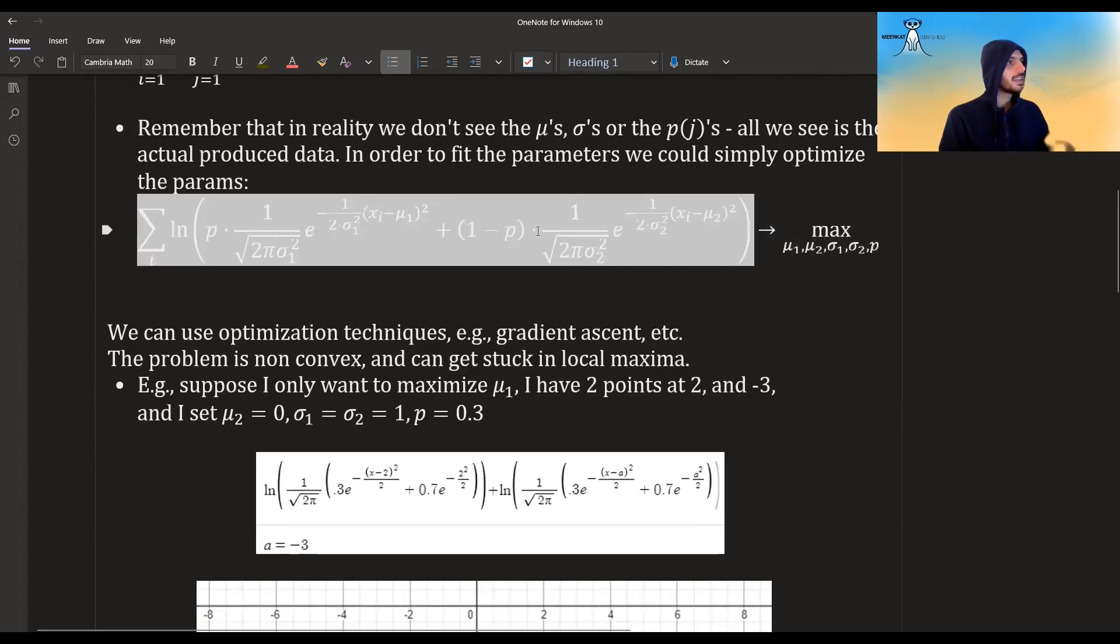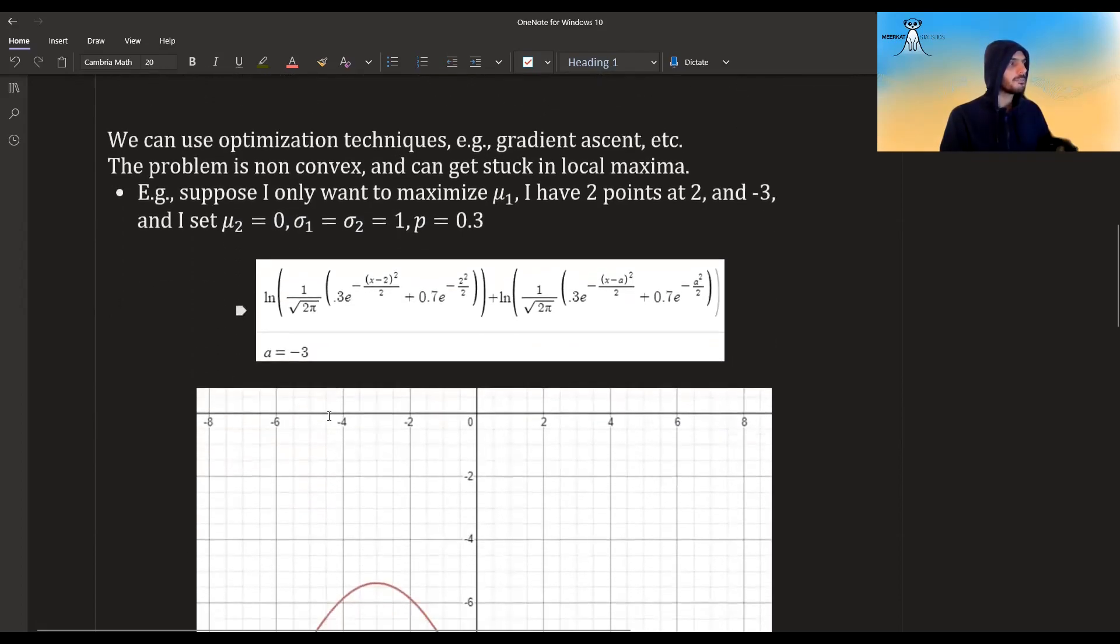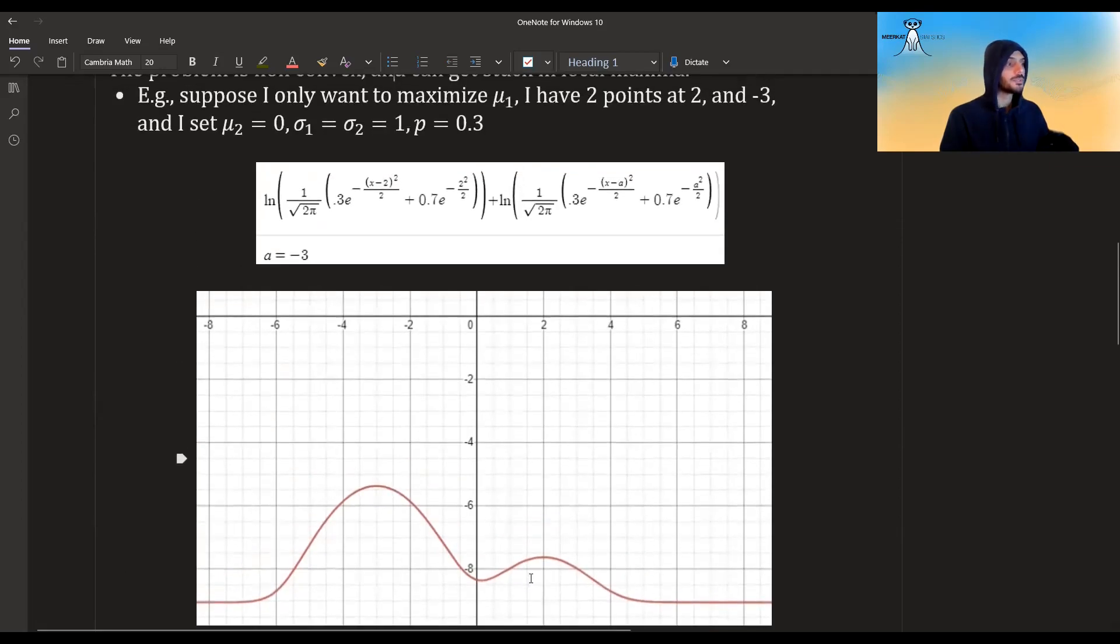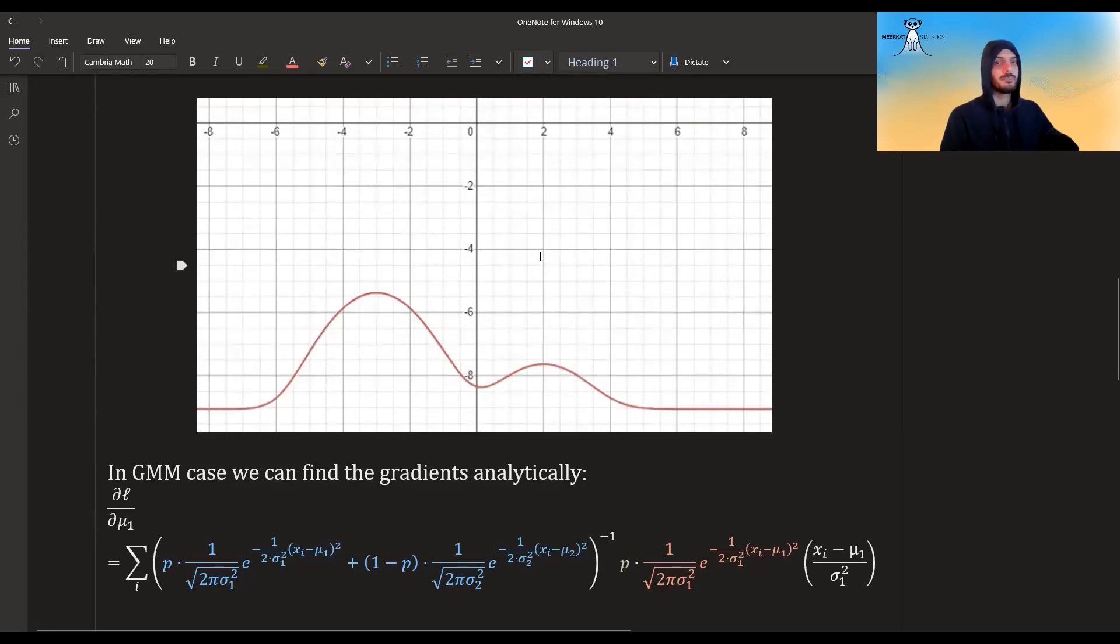So suppose I'm looking at this and I only want to maximize with regard to mu one. And suppose I have two points. One of them is two and one of them is minus three. And suppose I know all the other parameters. So suppose mu two is zero, sigma one and sigma two are one and p 0.3. So if I write down this equation again, mu one is my variable. I've plotted it in decimal. So I had to put it as x. But the x here represent the mu. And here's what I get. And if I plot this, this is what I get. So you can see this is not convex with regards to mu, right? If the x axis here is the mu, then you can see I could get stuck here, where the true maximum is here. So the main point is that it's not convex.